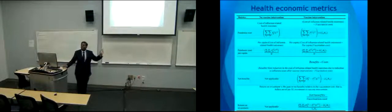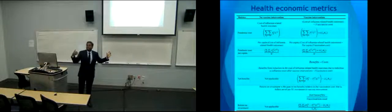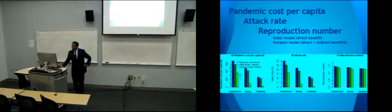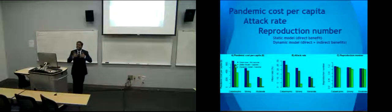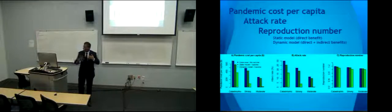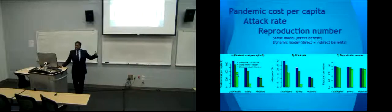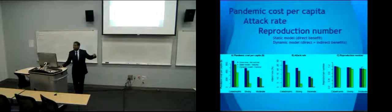Looking at pandemic cost per capita for the three influenza scenarios, we compare the base model with no vaccine intervention, the static model quantifying only direct benefits, and the dynamic model quantifying both direct and indirect benefits. The dynamic model shows the lowest pandemic cost per capita, similarly the lowest attack rate and lowest reproduction number. The moderate scenario shows hardly any epidemic with the vaccine intervention, as the reproduction number is almost close to one.